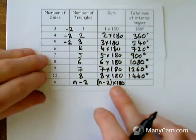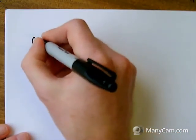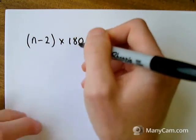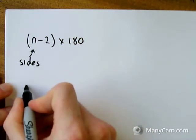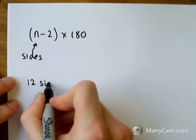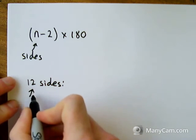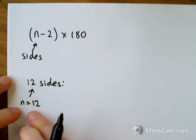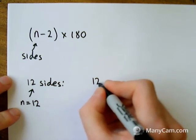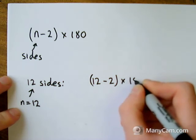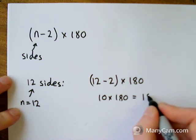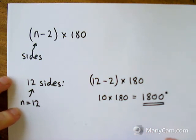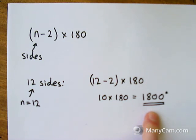Using that formula as an example: the formula is (N − 2) × 180, where N is the number of sides. Say I want to know how many angles there are in a 12-sided shape — N equals 12. Substituting into the formula: 12 take away two times by 180, which gives me 10 times 180, which equals 1800 degrees. So in a 12-sided shape there are 1800 degrees.